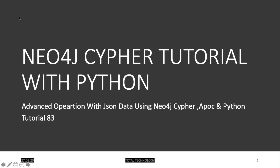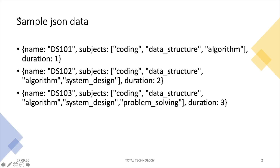Once this is done, from the next tutorial onward we'll start developing some Cypher queries to generate graphs from JSON data. So this is the simple JSON data — in the last tutorial we had only one entry, but now I have three entries: DS101, DS102, DS103. These are a kind of exam, and every exam has some subjects with their names listed.